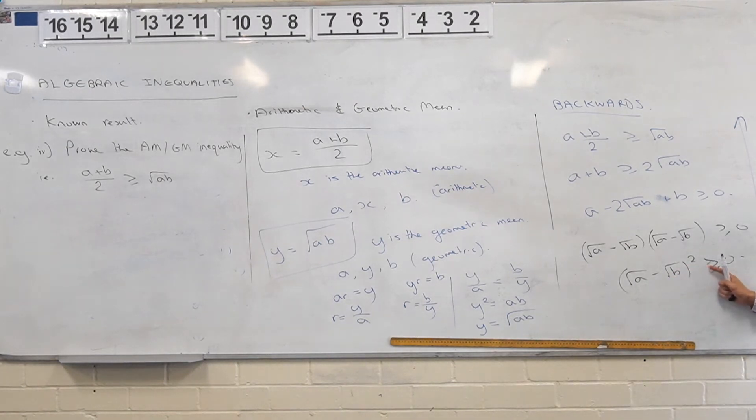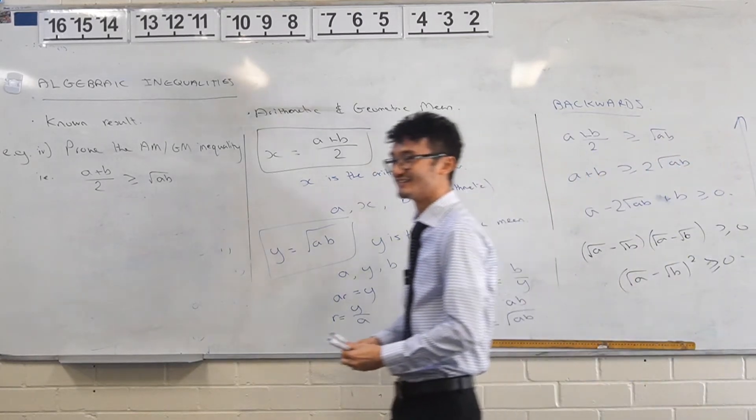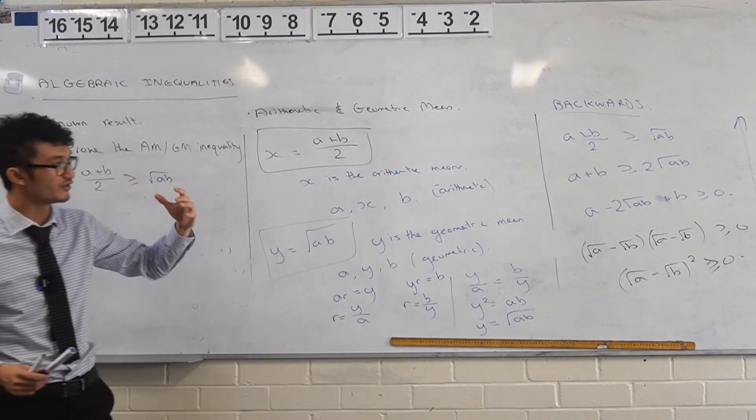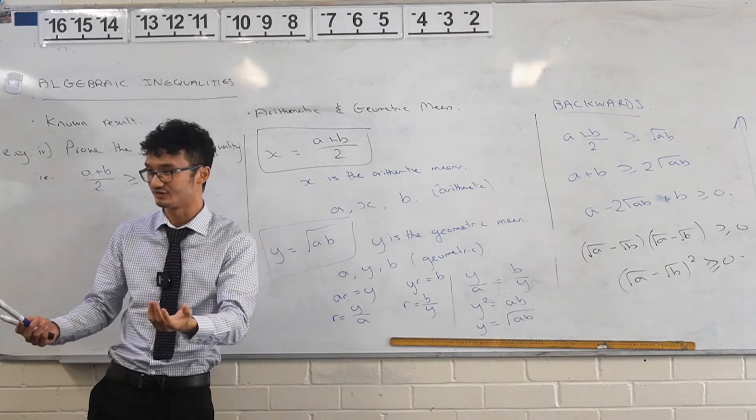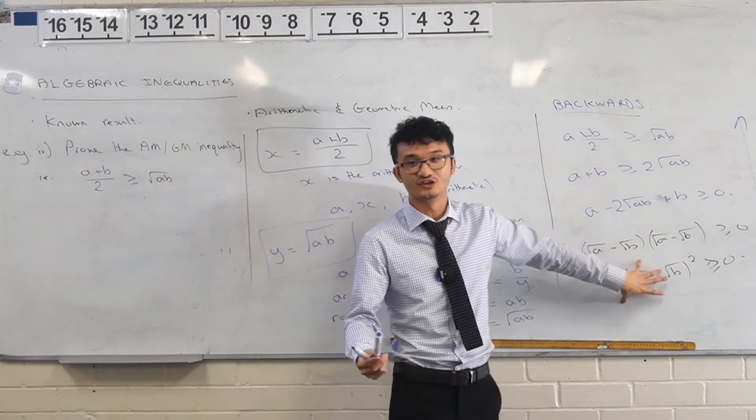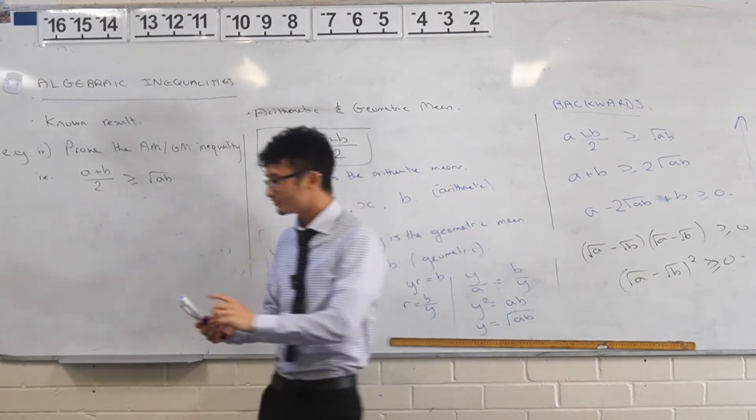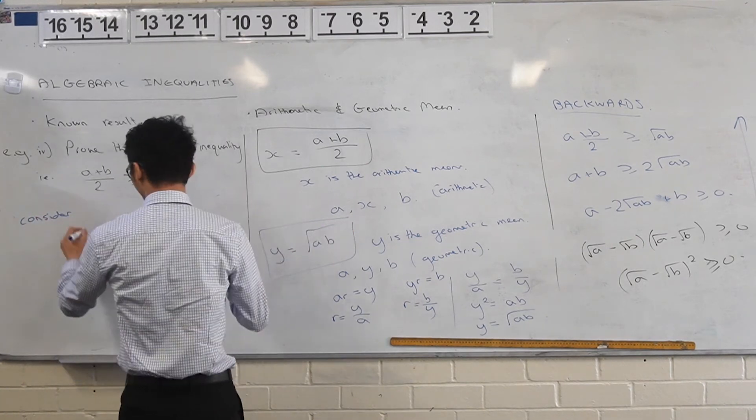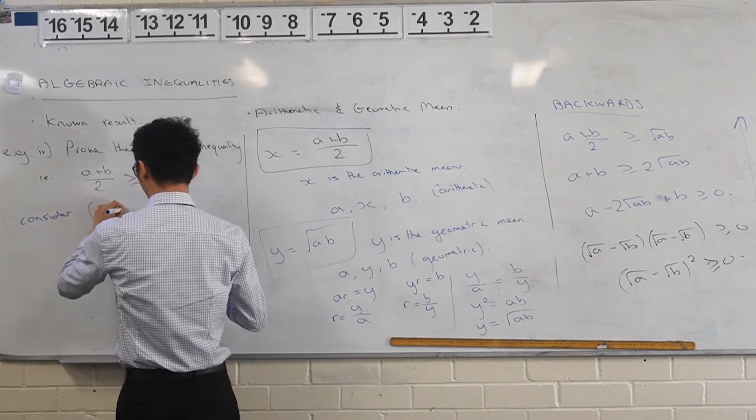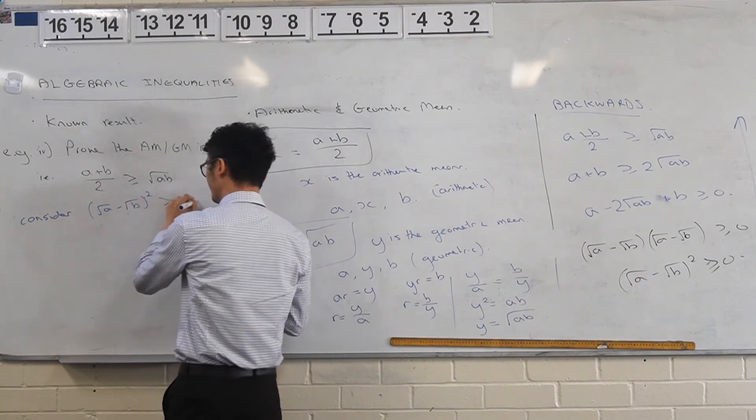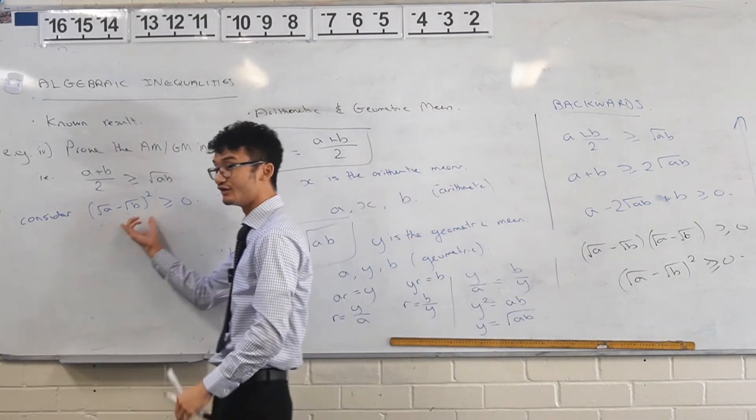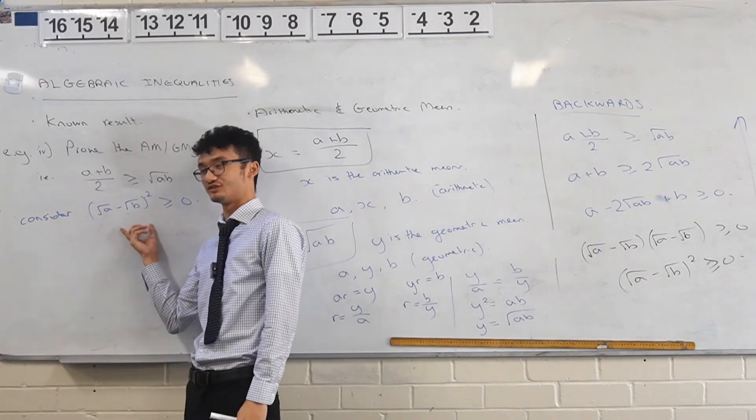You know that this is a known result, you know that this is always true because it's greater than or equal to zero. So we start with this now. In the exam what you'd say is, because you can start with a known result—something that is always true, like you know that a squared is always going to be greater than or equal to zero—you write: you consider this expression, you consider (square root of a minus square root of b) squared always being greater than or equal to zero. This is what it means to start with a known result. I know this is always true, I'm allowed to start with this.